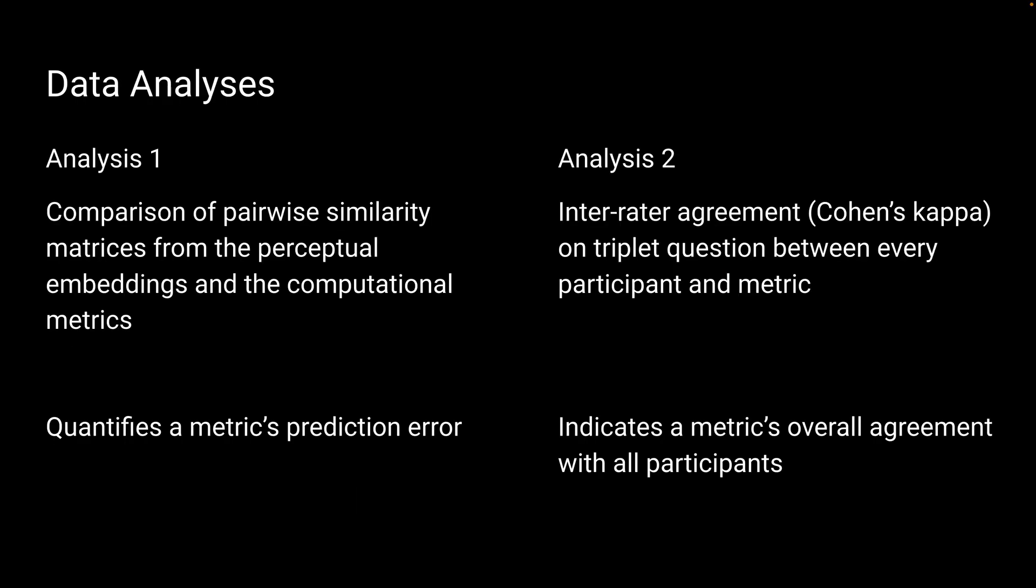We perform two data analyses. In the first analysis, we leverage the perceptual embeddings of stimuli and compare the pairwise similarity matrices from the embeddings and the computational metrics. We then perform a supplementary analysis number 2, which is an inter-rater agreement on the triplet questions between every participant and metric. Analysis 1 quantifies a metric's prediction error and analysis 2 basically indicates a metric's overall agreement with all participants.